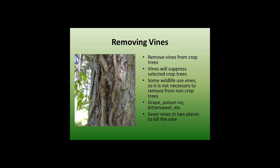Another thing to do with your crop trees is remove the vines. Vines will choke out and suppress your crop trees, but at the same time some wildlife do find vines beneficial — different birds will use them. So it's not necessary to cut vines off trees you don't mind dying anyway. As long as the crop tree is freed up, it's okay to leave some vines on other trees. For vines like poison ivy and bittersweet, you sever them in two spots and leave them — you don't want the cut vine laying on the ground where it could re-sprout. You can apply herbicide if you like, but cutting at two spots essentially kills the vine.